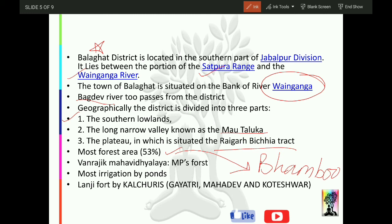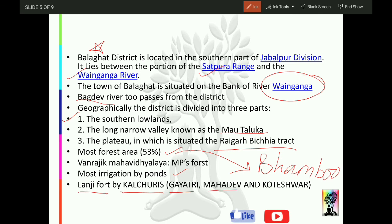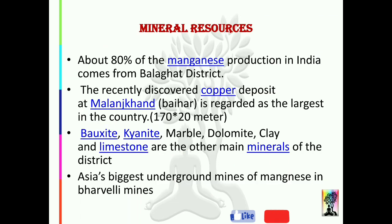Most irrigation here happens through ponds and tanks. There is also a fort here called Lanji Fort, which was built by the Kalachuris. Inside it there is a Gayatri temple, a Mahadev temple, and a Koteshwar temple.